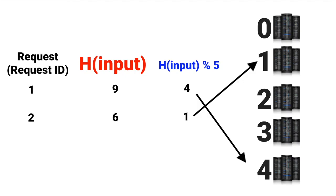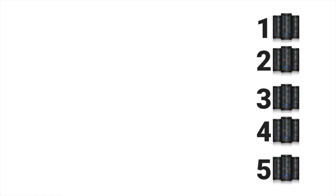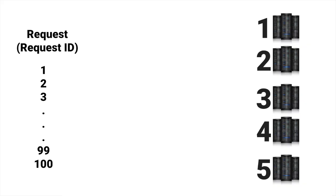Let's take a simple example for the sake of understanding. Say we have five servers and 100 requests with unique IDs. We can assume each server will get 20 requests. Server 1 serves request IDs 1 to 20 and stores the related data; server 2 serves request IDs 21 to 40 and stores the related data; and so on for the remaining servers.